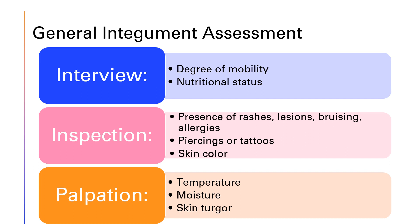We also want to inspect for any alterations to the skin, like tattoos, lesions, bruising or bleeding, sun exposure, scars, moles, and hair patterns. We're going to need adequate lighting to fully observe the skin color and any skin changes, and it's also going to let us know how well they're caring for themselves because we'll be able to see if their skin is clean or dirty.